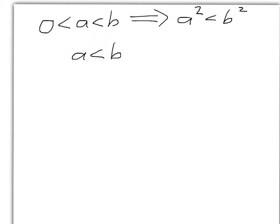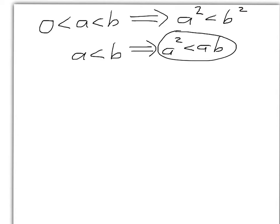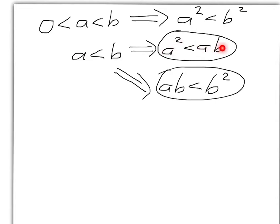Remember the property that if you have an inequality and you multiply both sides by a positive number, it's preserved. So let's multiply by the positive number A, and that gives us A squared less than A times B. Now, if instead we want to get B squared in the picture, a similar trick would be to multiply by B, and that gives us AB less than B squared. Look at the two results we've got — they're both inequalities with this common linking term, going in the same direction. So we can apply transitivity and deduce that A squared is less than B squared, which is exactly what we wanted.